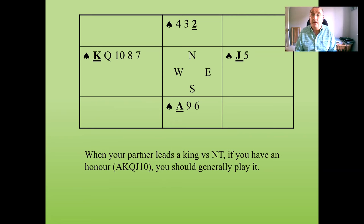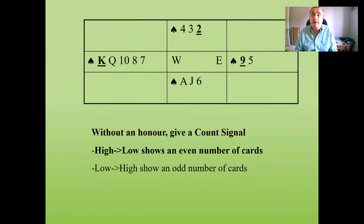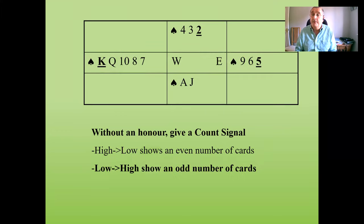If you don't have an honor when your partner leads the king, you give a count signal. You play a high card to show you started with an even number of cards, or a low card to show you started with an odd number. This helps your partner figure out what's going on in the suit. For example, if you started with three cards — nine-six-five — and your partner leads the king, you would play the five to show an odd number.